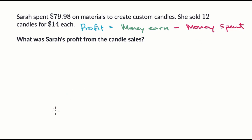So let's think about the money that Sarah earned here. Well, we see here that she sold 12 candles for $14 each. So the money that she earned is going to be 12 times $14. So there's several ways we could do that, but let's just do 12 times 14.